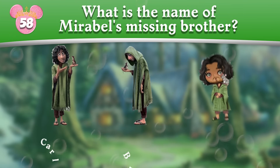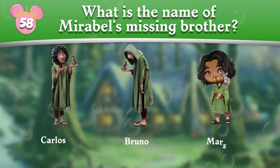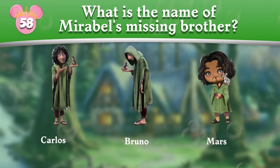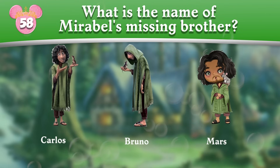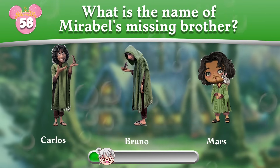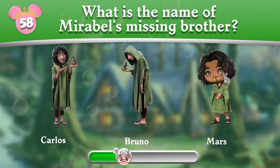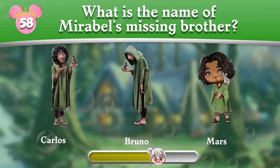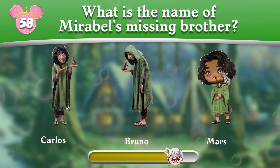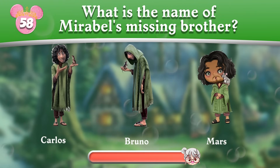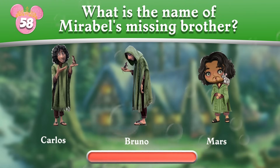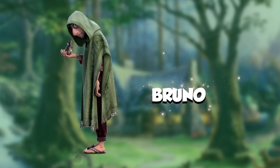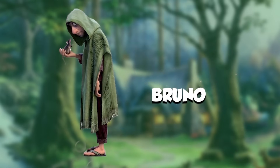Round 58: What is the name of Mirabel's missing brother? His name is Bruno!